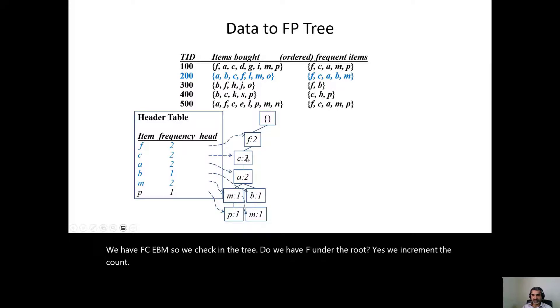Under F, do we have C? We increment the count. Under C, do we have A? Yes, we increment the count. Under A, do we have B? No. So we create a new node and put the address of that node in the header table and put one here, because this is the first time we are seeing B. And then M. After B, we check if M is there. No. We put M under B. A link is missing here, but after putting M under B, we create a link to the existing M. So this dotted line shows the other occurrence of M in the tree.